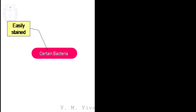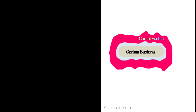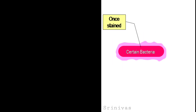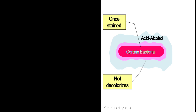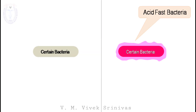Certain bacteria, on application of the carbol fuchsin staining solution, can easily take up the stain to their cell surface. On application of the decolorizing agent — the acid alcohol — they can easily get decolorized, leaving the bacteria colorless. In contrast, certain bacteria are difficult to stain with carbol fuchsin. But once they take up the stain, on application of the decolorizing agent — the acid alcohol — they are not decolorized, leaving the bacteria stained pink. Such bacteria are called the acid fast bacteria. The other group, which get easily decolorized with acid alcohol, are called the non acid fast bacteria.